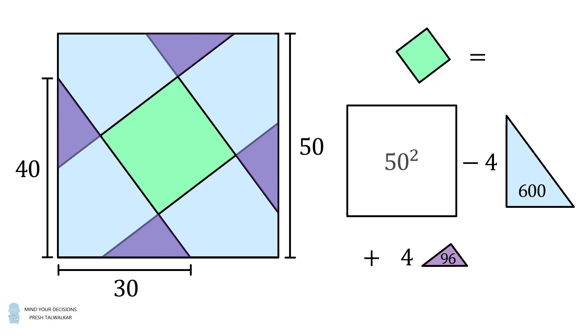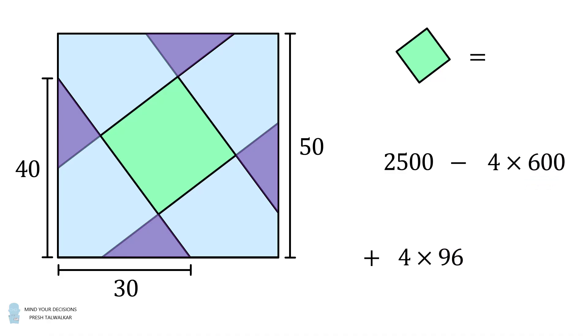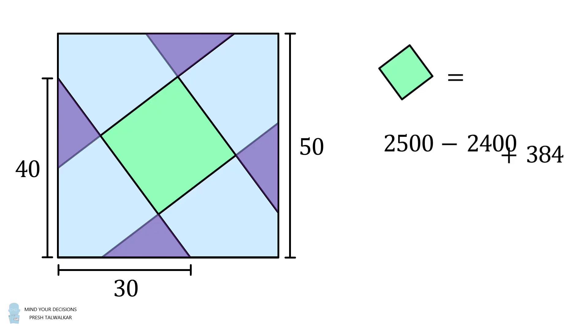Now the area of the square is equal to 50 squared, which is equal to 2,500. Now we just need to simplify. We have 2,500 minus four times 600 plus four times 96. We go ahead and do some arithmetic, and then we do some arithmetic again, and we get the area of the region shaded in green is equal to 484. And that's the answer.